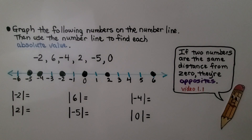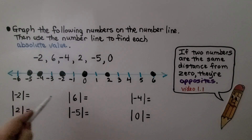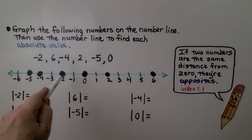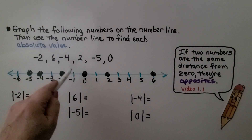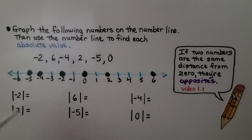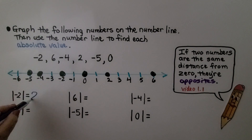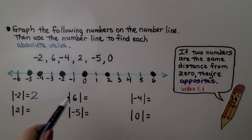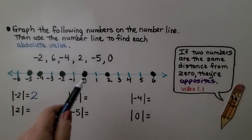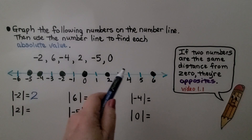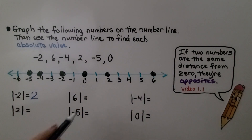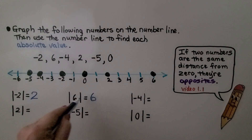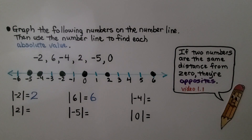Now we can count the jumps from zero to find their absolute values. For the absolute value of negative two, it's one, two jumps away from zero, so its absolute value is two. For six, it's one, two, three, four, five, six jumps from zero — the absolute value of six is six.